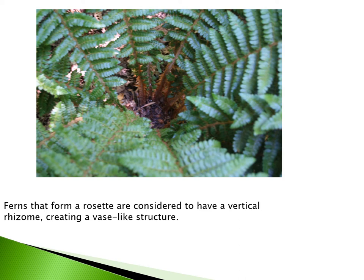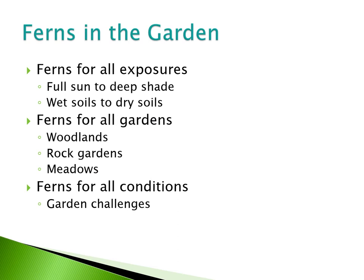Short creeping ferns usually form dense clusters. Ferns that form rosettes are considered to have a vertical rhizome — they appear more vase-shaped and will spread and form colonies over time, appearing more as individual plants. There are ferns for every location in the garden. Ferns grow in full sun and deep shade, tolerate a wide range of soils, and can be found in all habitats. They are worthy perennials just like many perennials, shrubs, or trees that you strive to fit into your garden spaces.